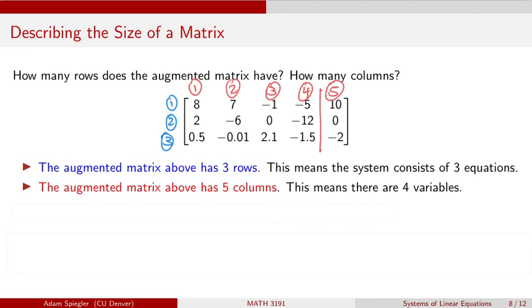This last column corresponds to the constants that are on the right side of the equation. We've got one variable, two variables, three variables, four variables for the first four columns. And then that fifth column corresponds to the constants on the right side.